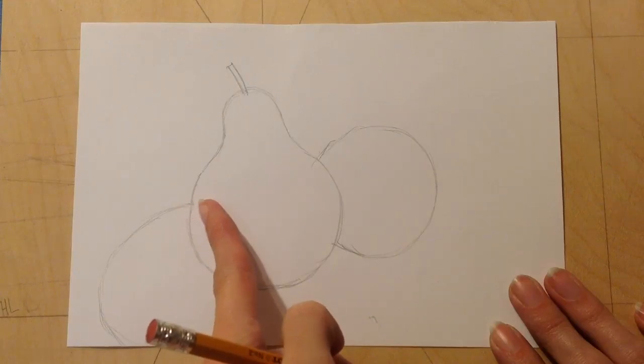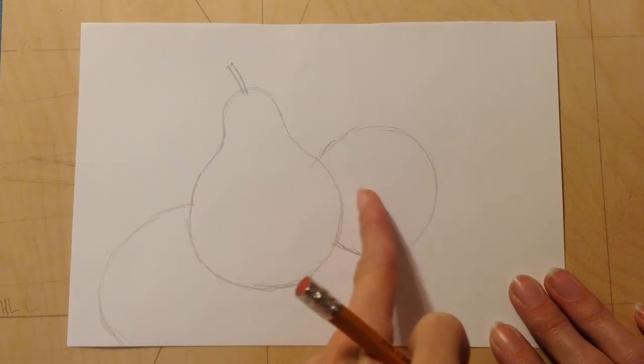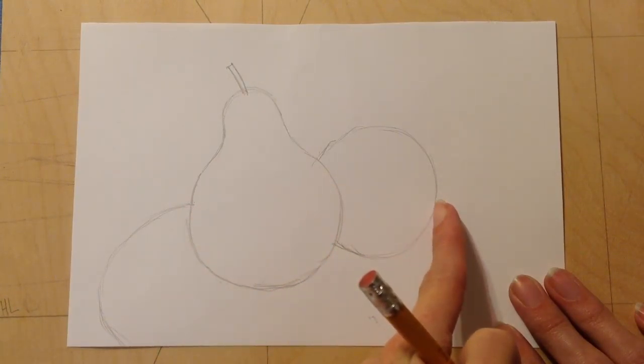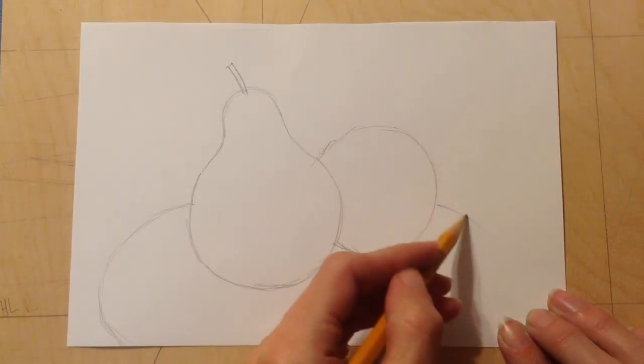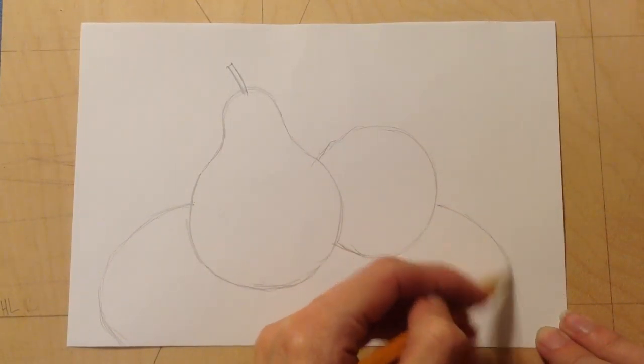And I imagine this line is continuing behind the fruit. And it curves on the other side, for the other side of my plate.